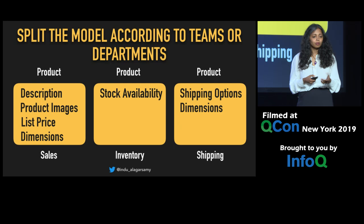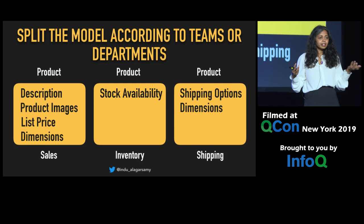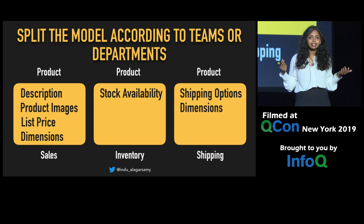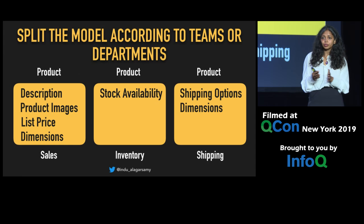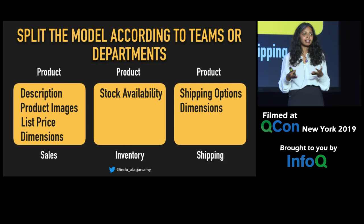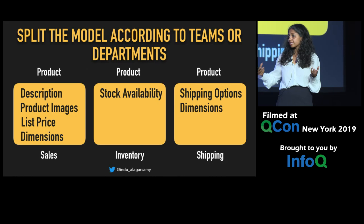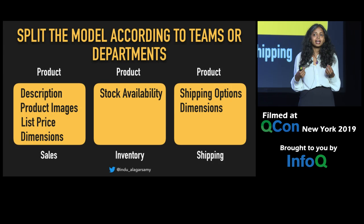So you might have three contexts: sales, inventory, and shipping. In each of these different contexts, you can have a model for 'product' which is entirely different, with the same attribute names — and it doesn't matter. By doing this, you're using the language of the domain, and domain people can understand. When you refer to 'weight,' you're using the same term they know. There's no communication problem.